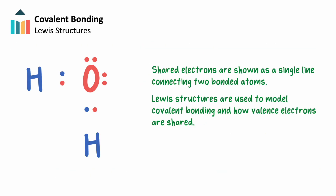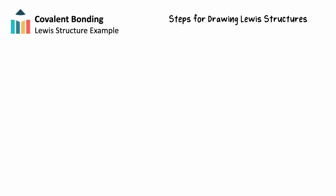The shared pair of electrons in a covalent bond is represented by a single line connecting the two bonded atoms. We can use the number of valence electrons from the atoms within a molecular formula to determine how the atoms will be bonded together. This is called a Lewis diagram, or Lewis structure, and is used to model covalent bonding and how valence electrons are shared across a molecule. We'll examine covalent bonding in the Lewis structure process for three different molecules, beginning with the sulfate ion SO4²⁻, a covalently bonded polyatomic ion.